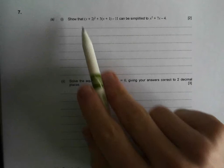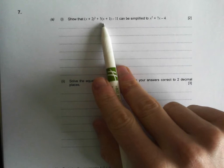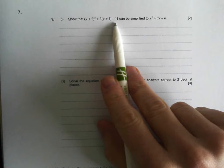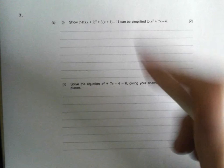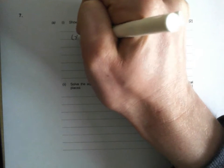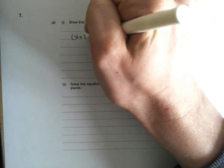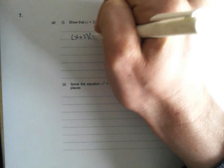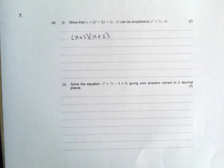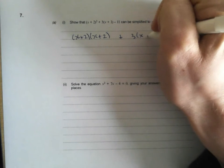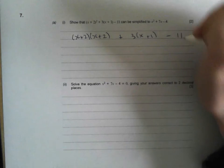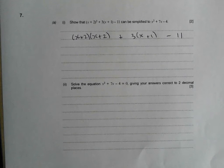Show that x plus 2 squared plus 3x plus 1 minus 11 can be simplified to give that. Let's work with this left hand side and sort each bit out in turn. So I've got x plus 2 squared. I'm going to write that out as a double bracket, plus 3 lots of x plus 1 minus 11. I'm just going to deal with each bit in turn and hope it simplifies nicely to leave me with what I need.